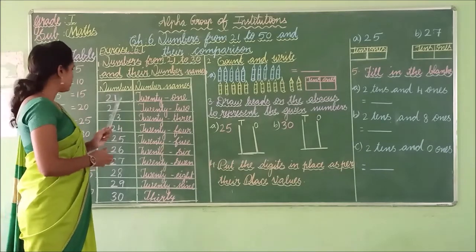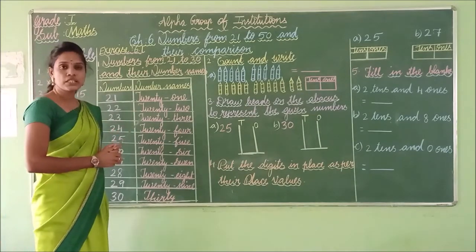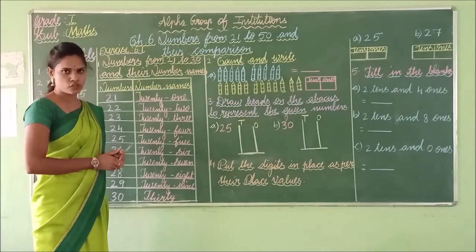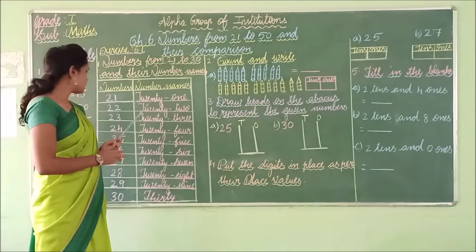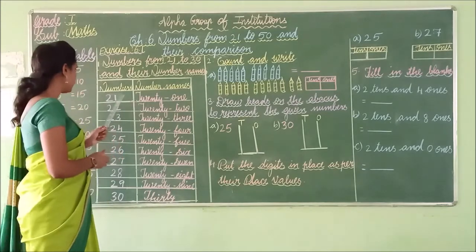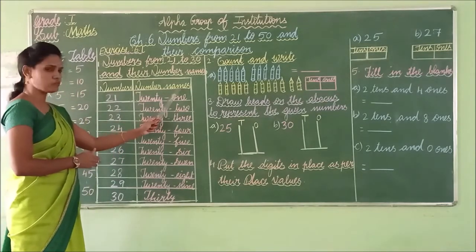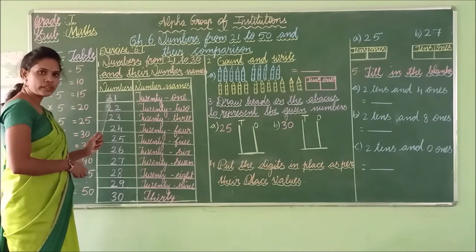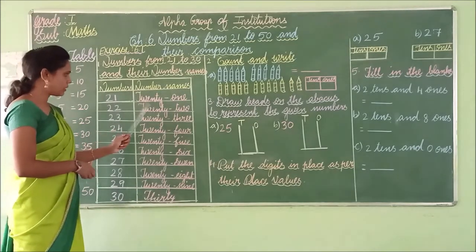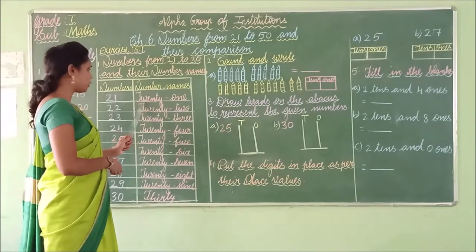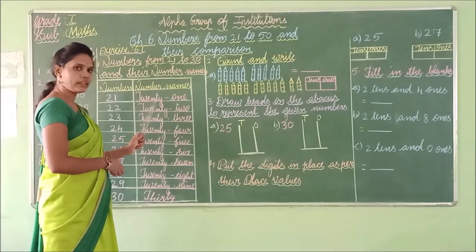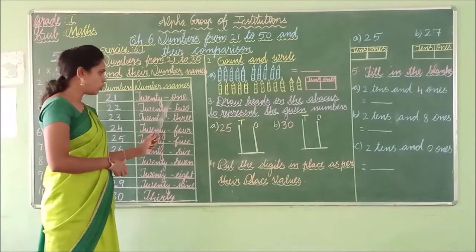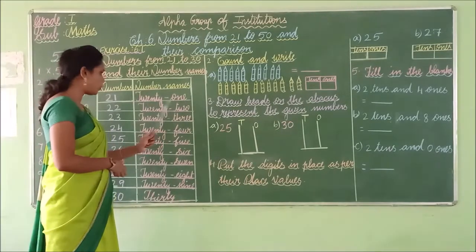So first I have written here numbers from 21 to 30 with their number names. Shall we see this one now? Numbers and number names. 21 — the number name is T-W-E-N-T-Y O-N-E. 21.